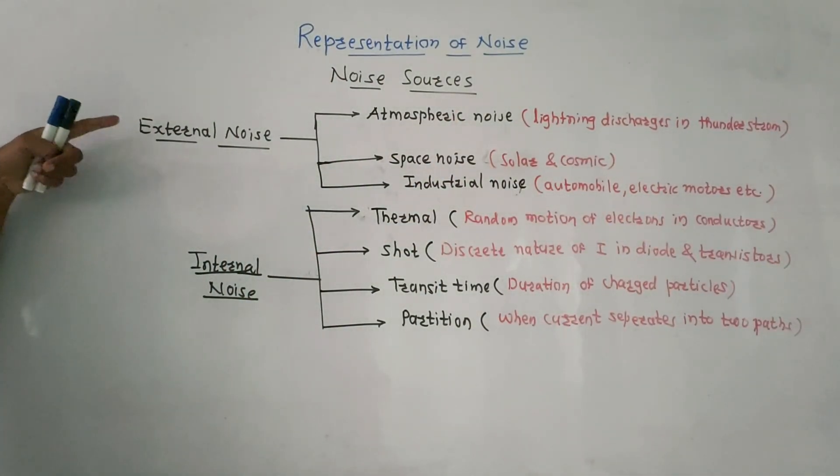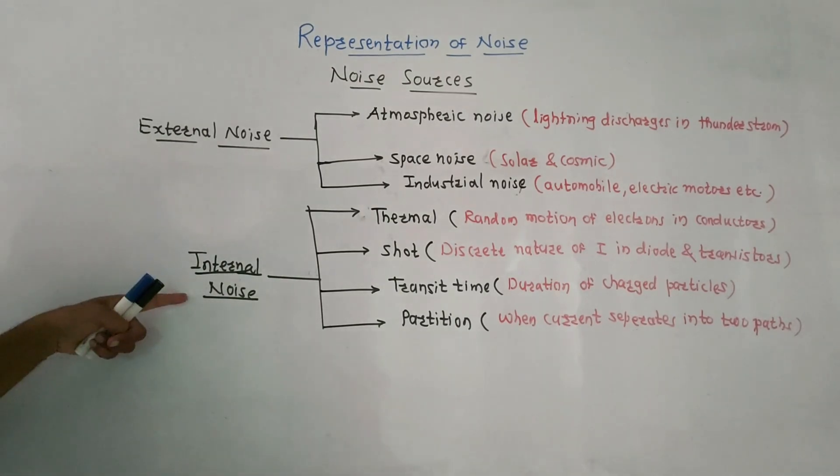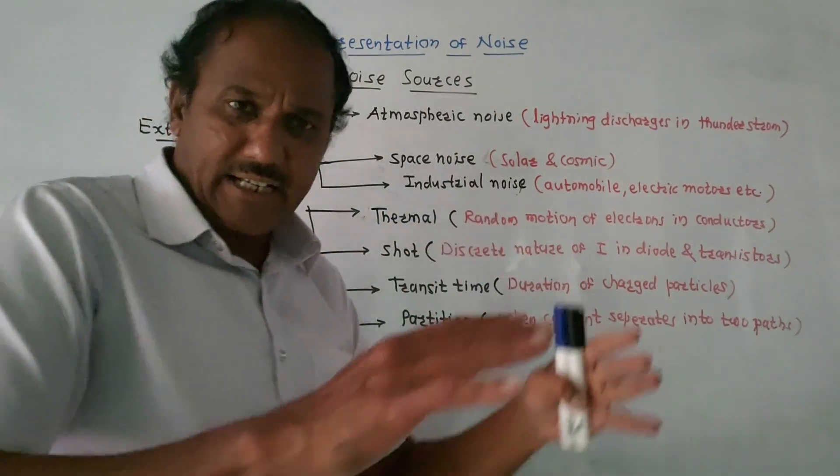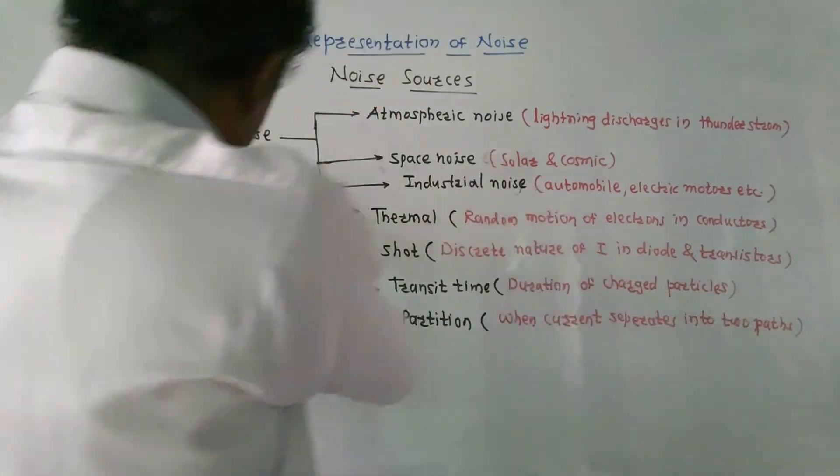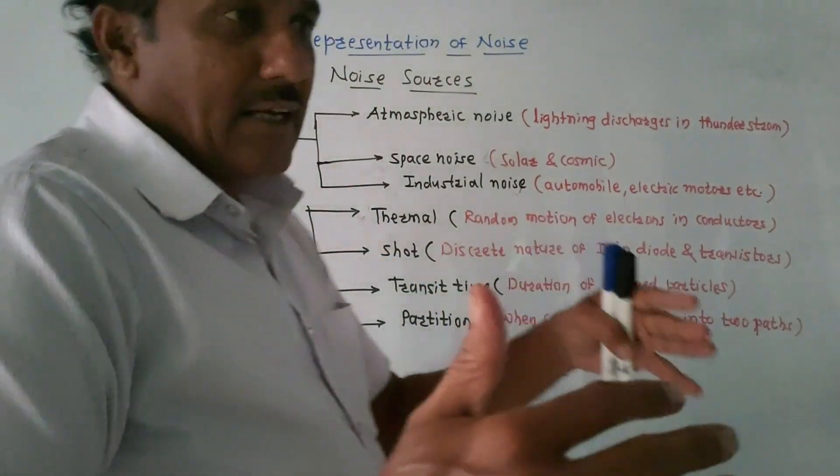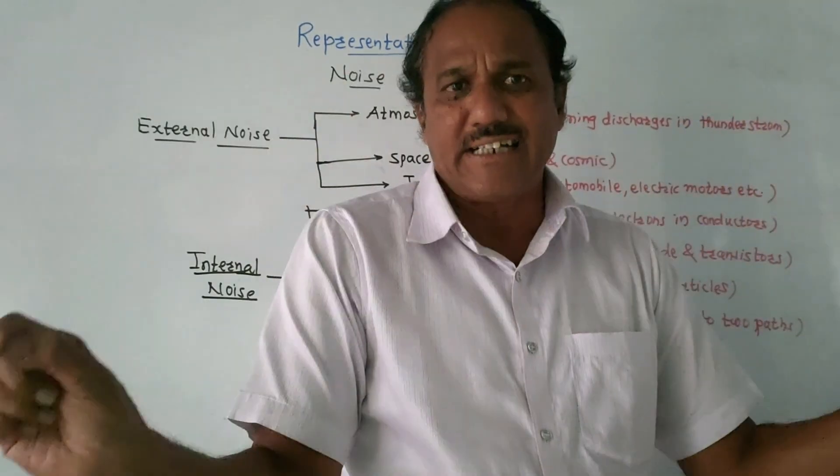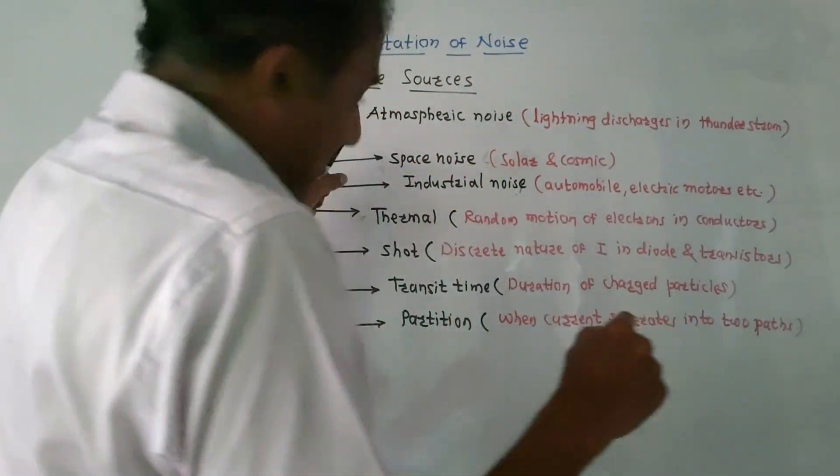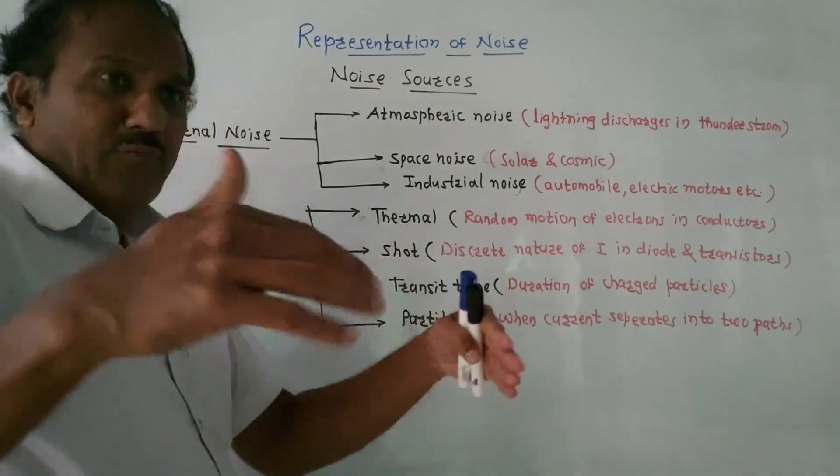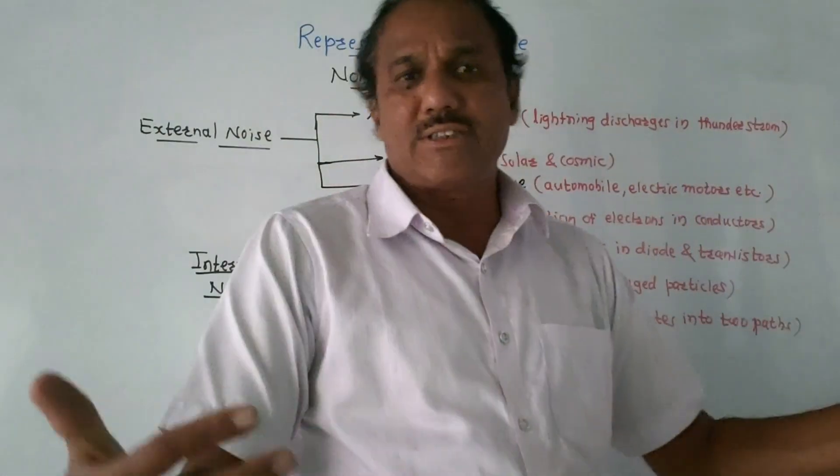Broadly, there are two types of noise. One is external noise, another is internal noise. As the name indicates, external noise - these are the noise produced. We know that noise is basically unwanted signal. If it is external, it is produced somewhere. If you are talking about an electronic circuit, it is produced outside the circuit.